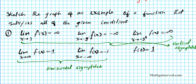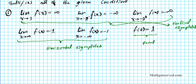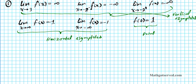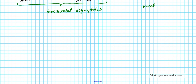Notice that as x goes to positive infinity the limit is 1, and to the left it is negative 1. And f of 0 equals 1 is simply a point — the point (0, 1). Now that we have all this information we can go ahead and sketch our graph.